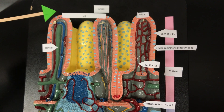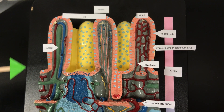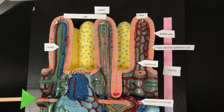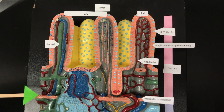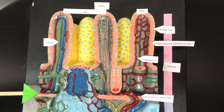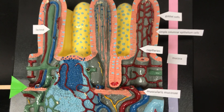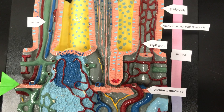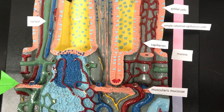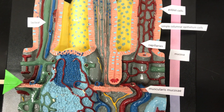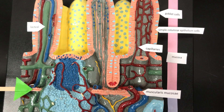The mucosa layer goes down to the boundary layer of the muscularis mucosae. This is a layer of smooth muscle.